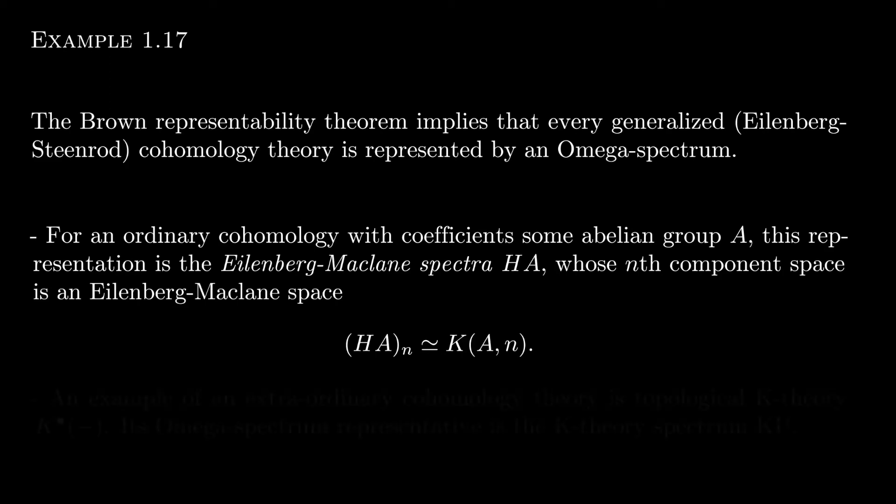An example of the non-ordinary cohomology, i.e. extraordinary cohomology, is with topological k-theory. The omega spectrum that the Brown representability theorem spits out is now called the k-theory spectrum and is denoted ku.